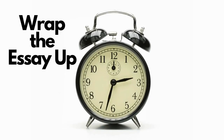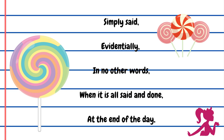We still need a conclusion paragraph. I equate it to a 4th of July fireworks grand finale — the big encapsulation of everything you said and presented. I give students simple stems like 'simply said,' 'evidentially,' 'in no other words,' 'when it is all said and done,' 'at the end of the day' — really let kids unload a good encapsulation of everything they've diagrammed in their essay. Shoot for three or four sentences. That puts a nice little ribbon and bow on the present at the end of the show. And that, my friends, is the Barbie monologue essay.